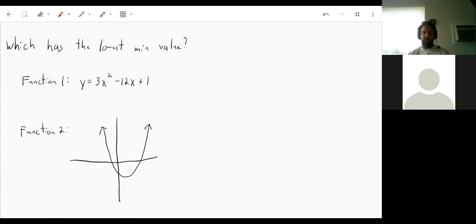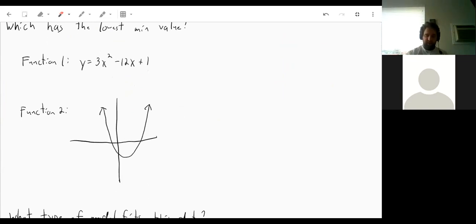Now we can also figure out which one has the lowest minimum value. And I just realized I didn't put in any lines on function two to help us figure out how low that is. So hopefully our function one is clear enough that function two is easier to interpret. So remember, to find that vertex, we need to find the line of symmetry, which is that negative b over 2a.